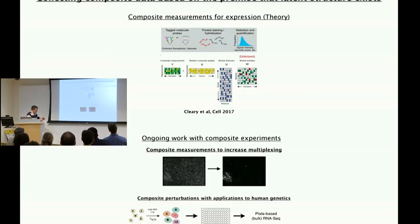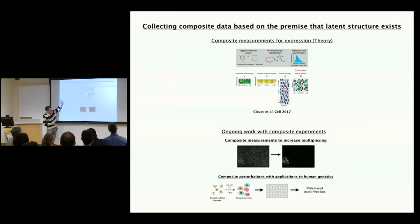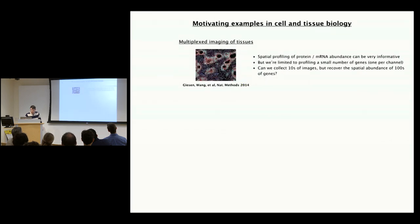What I would like to do is leverage that structure at the time of data collection. About a year ago we published a paper showing how one could use something called composite measurements to more efficiently study gene expression profiling. This was largely theoretical with lots of simulations, and now what we're doing is actually applying this idea to increase multiplexing capability in imaging studies and also to increase our ability to study cell circuits through genetic perturbations.